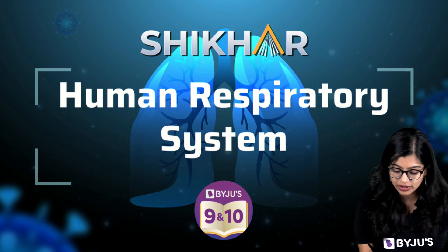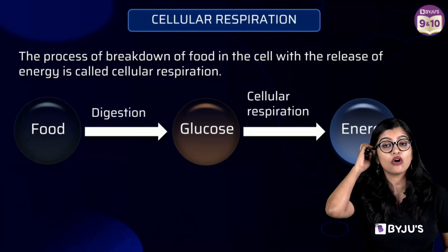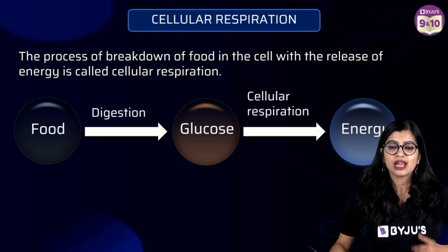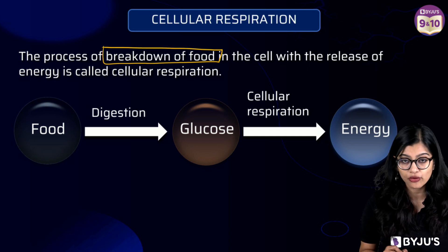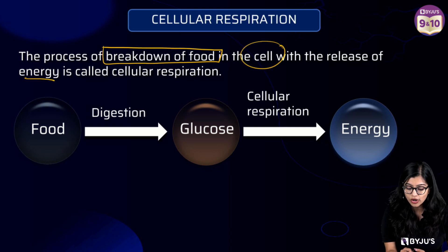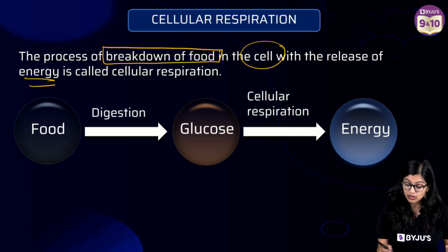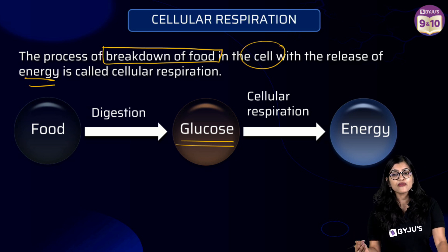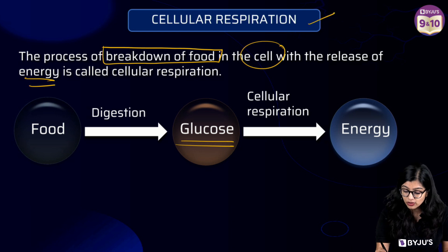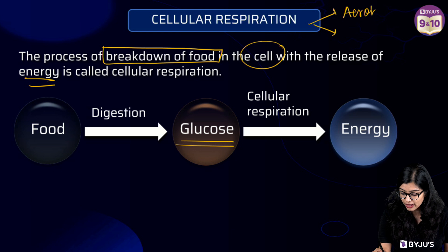When we talk about the respiratory system, a process we must be familiar with is cellular respiration. Cellular respiration can be simply defined as the process of breakdown of food within the cell in order to release energy in the form of ATP — essentially the breakdown of glucose to release energy. There are two kinds of cellular respiration: aerobic respiration and anaerobic respiration.